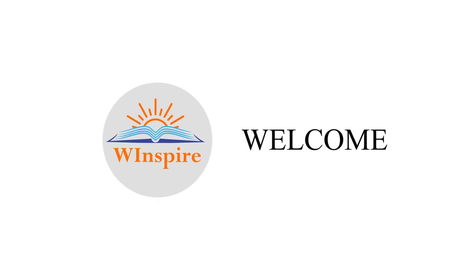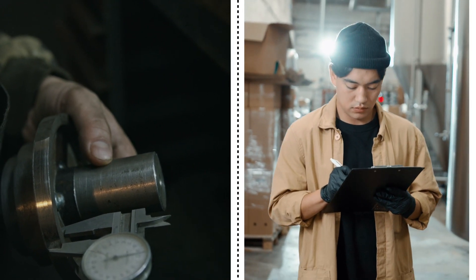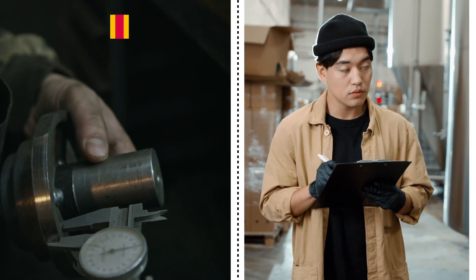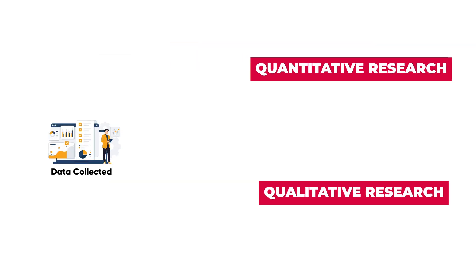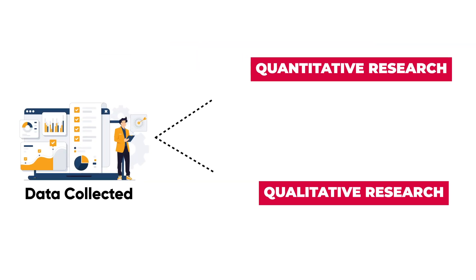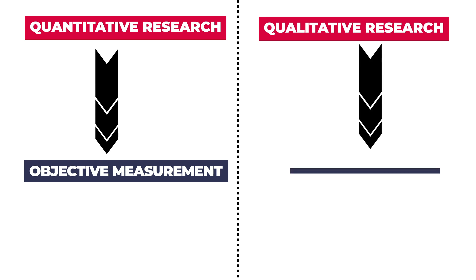Hello friends, welcome to our channel. In this video, we are going to talk about two types of research methods: quantitative research and qualitative research. The type of data you collect will be determined by whether your research is qualitative or quantitative. Quantitative means objective measurement and qualitative means subjective belief.